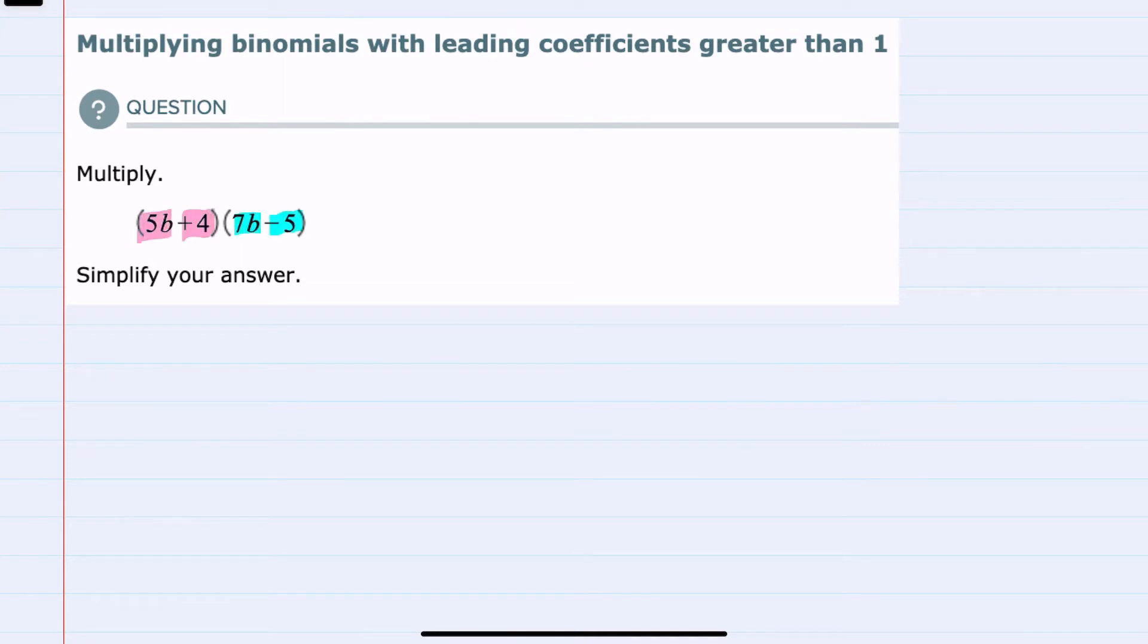We can see that in the first binomial, we have 5b plus 4, and the second binomial 7b minus 5.